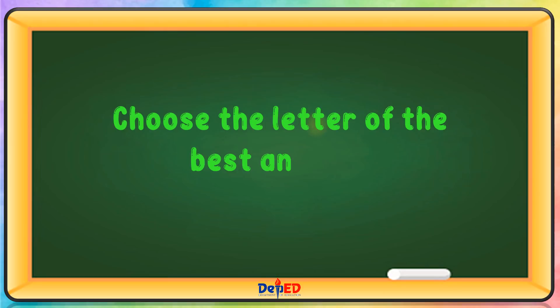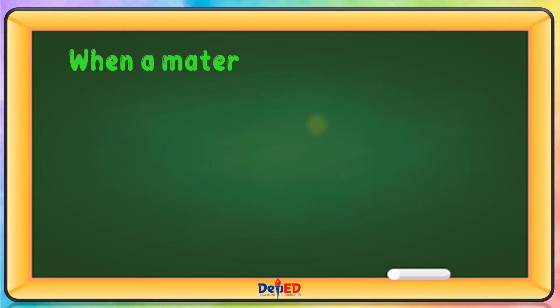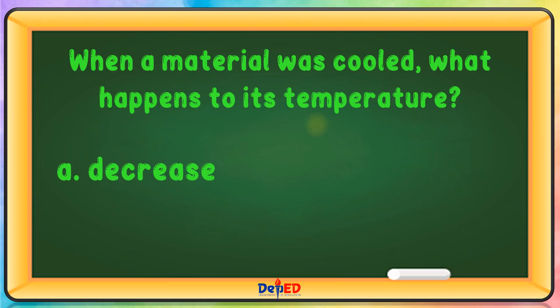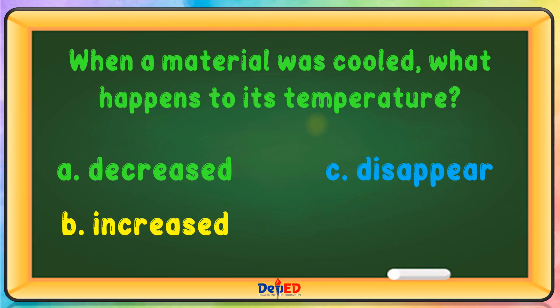Choose the letter of the best answer. When a material is cooled, what happens to its temperature? A. Decreased. B. Increased. C. Disappear. Or D. Remain the same. The correct answer is A.